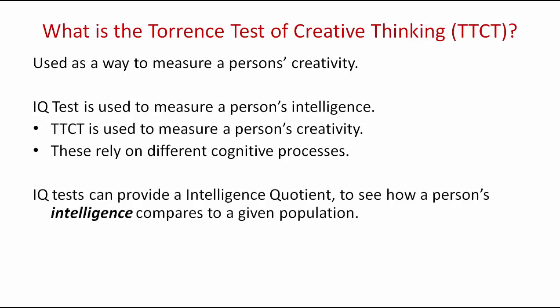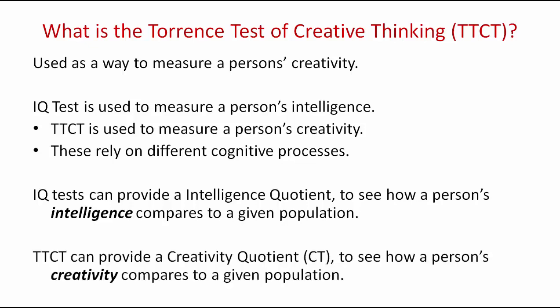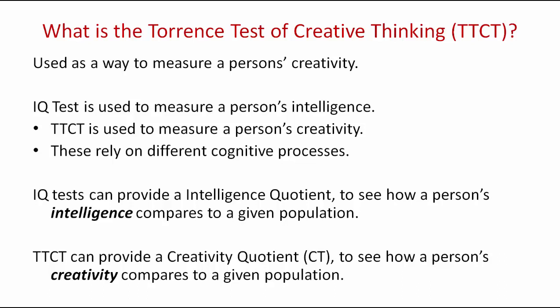The IQ test can therefore provide an intelligence quotient to see how a person's intelligence compares to a given population. The Torrance Test of Creative Thinking can provide a creativity quotient to see how a person's creativity compares to a given population.